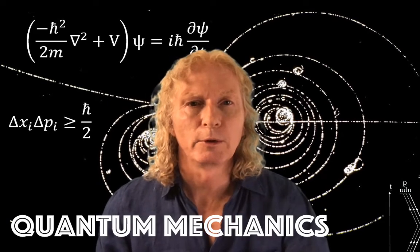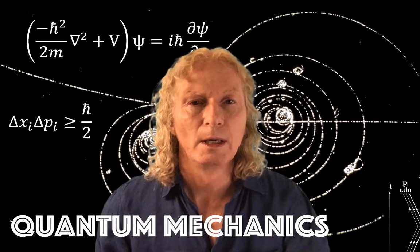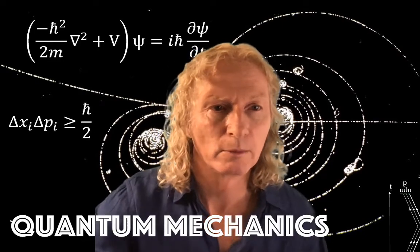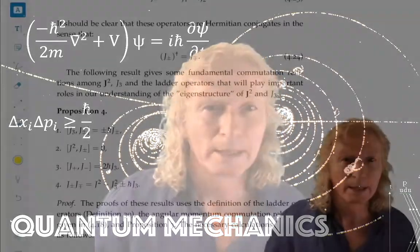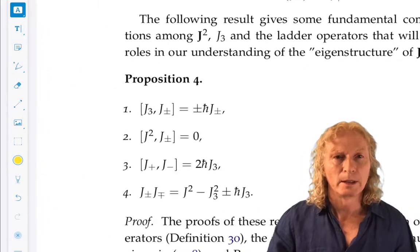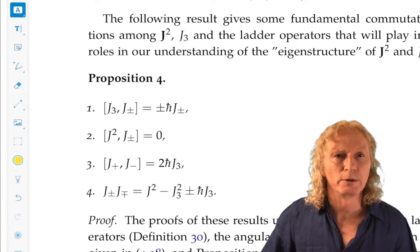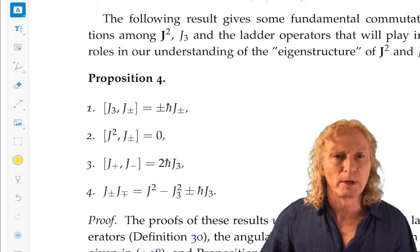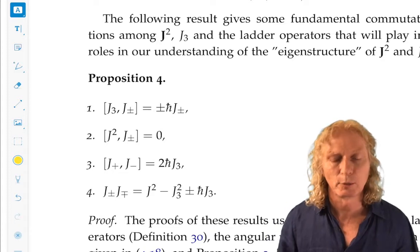Today we're going to finish our characterization of the eigenvalue eigenvector structure for J squared and J3. I can't emphasize enough that the structure comes from the commutation relations of J3 and J squared with the ladder operators J plus and J minus, and that's encapsulated in this proposition 4.